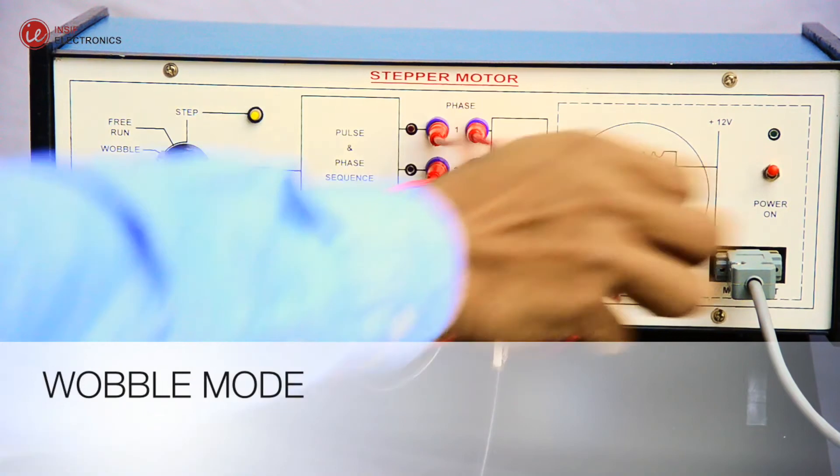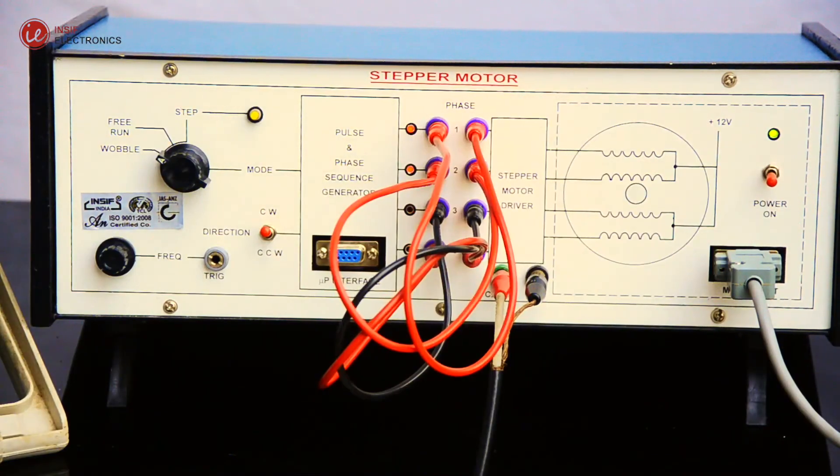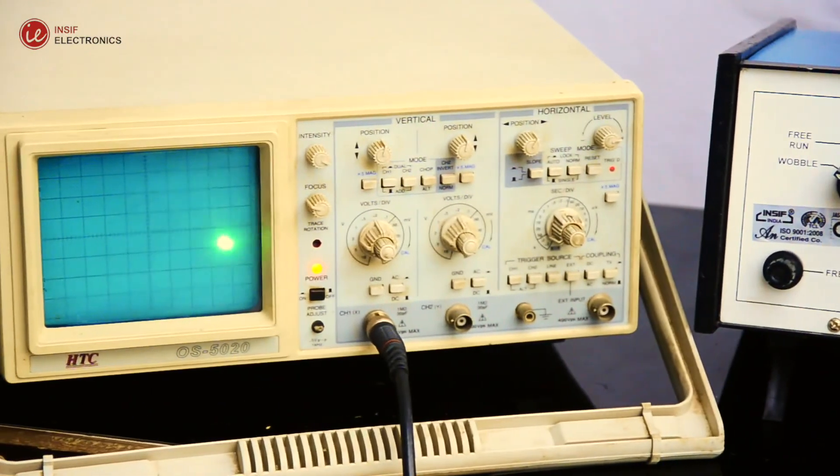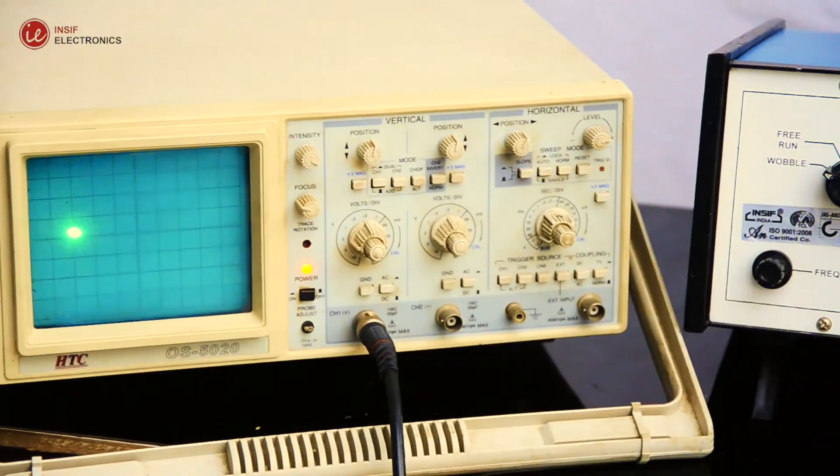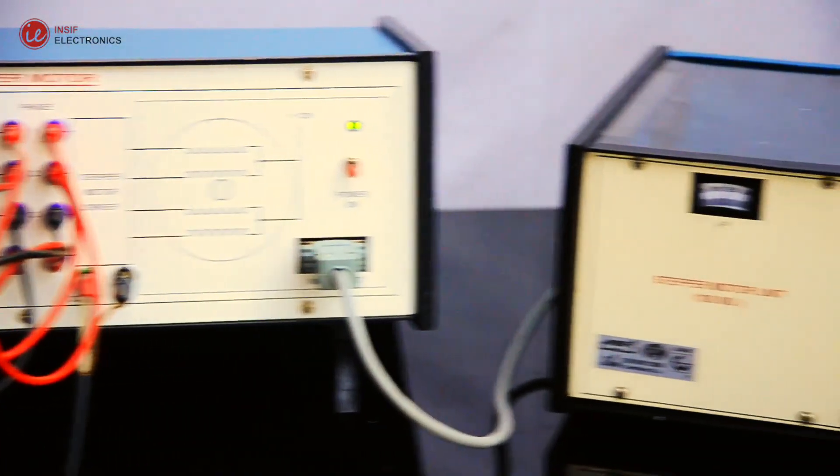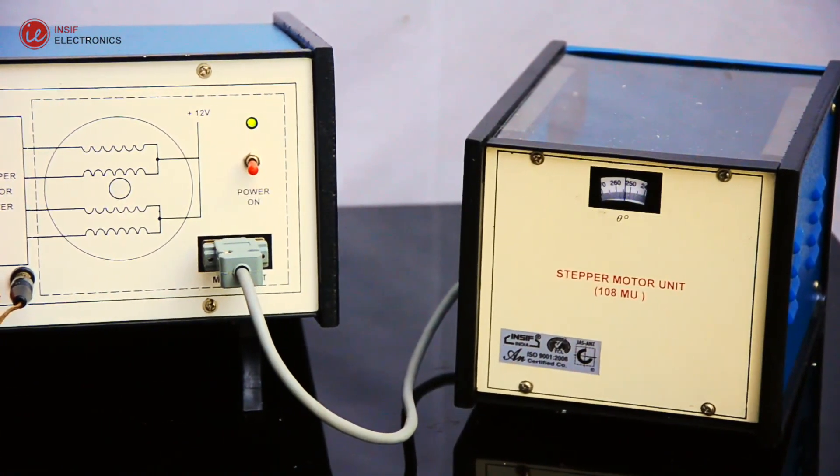Select wobble mode. Connect the CRO and observe the pattern on CRO at wobble condition, and also look at the motor unit. The motor is wobbling.